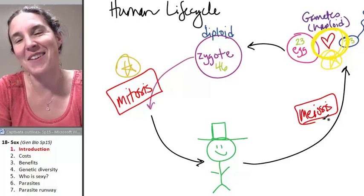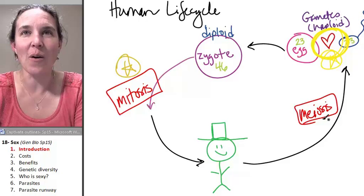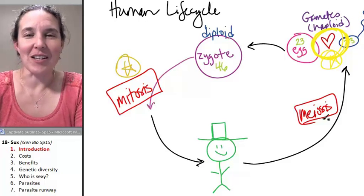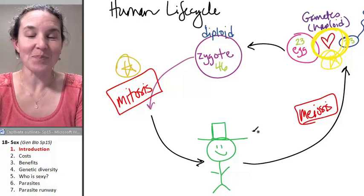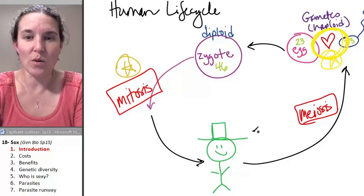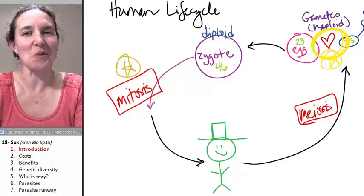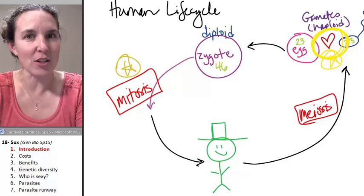and then make the link to parasites, and then take a little wander down the parasitic runway, because parasites are so awesome. So we have to talk about some of them, because they're so cool. All right, so first of all, go ahead and think in your brain what are some of the costs of sex that you can think of? And then I will come back, and I will make my case for some of the costs of sexual reproduction.